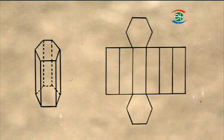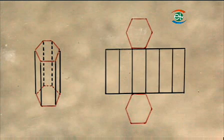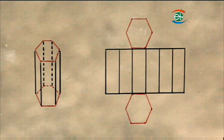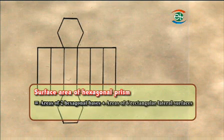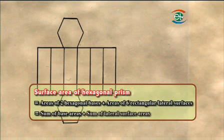This is a hexagonal prism, and its net is like this. The two bases are hexagons, and the six lateral surfaces are rectangles. Therefore, the surface area of the hexagonal prism equals the areas of the two hexagonal bases and the areas of the six rectangular lateral surfaces — in other words, the sum of the base areas plus the sum of the lateral surface areas.